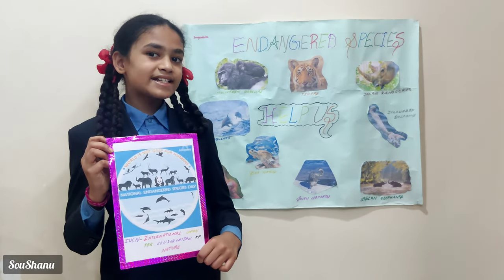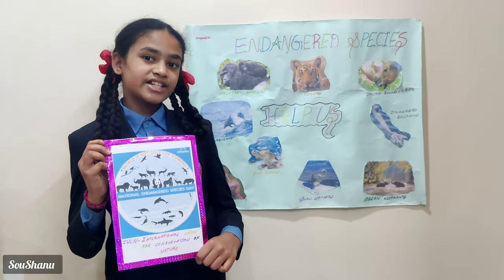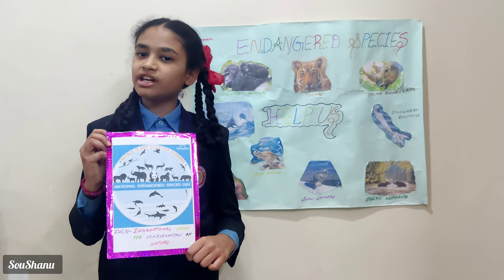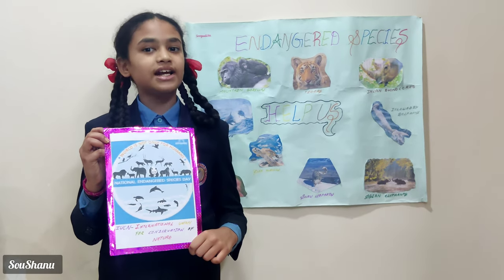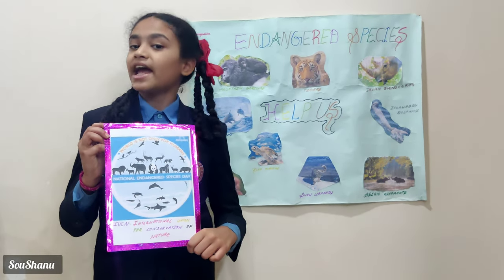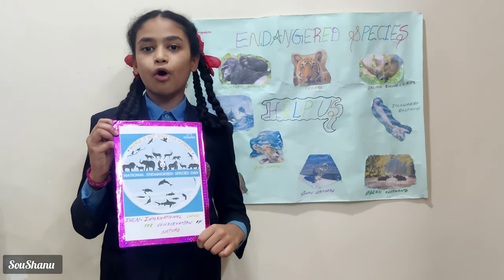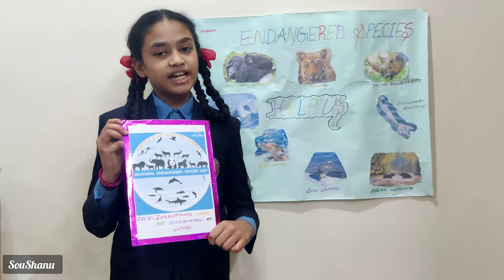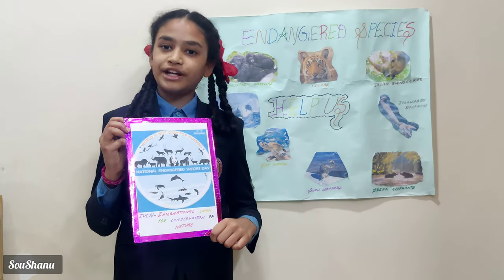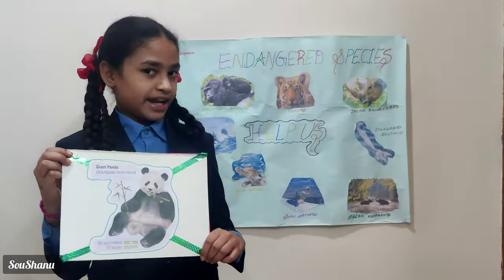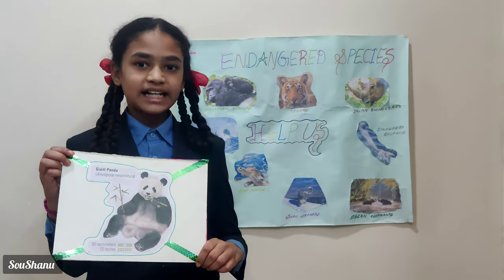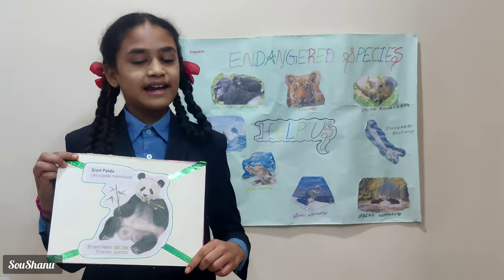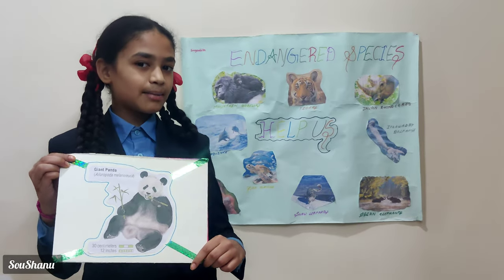Now who declares an animal as endangered? The IUCN, the International Union for Conservation of Nature, declares it. It has all the data of all insects and animals and updates the status of each to all.